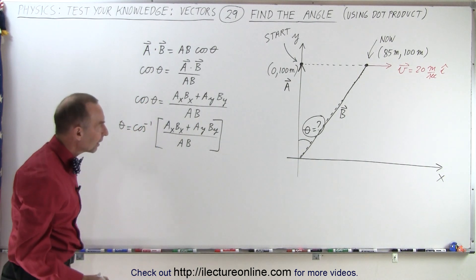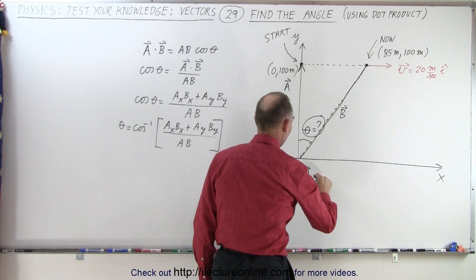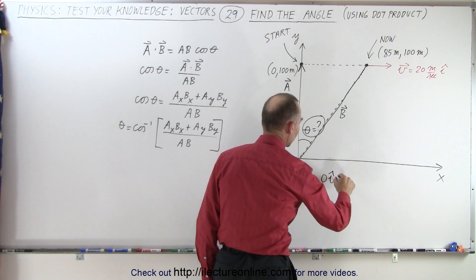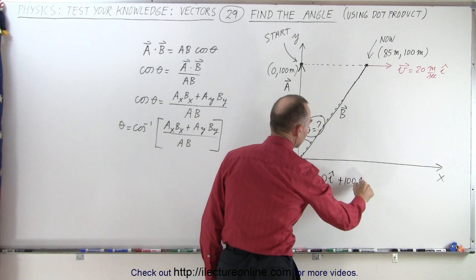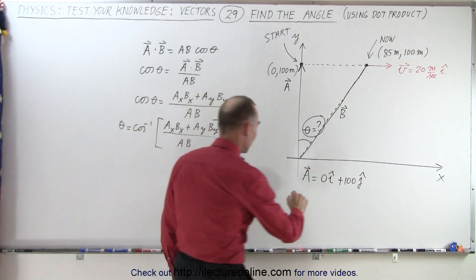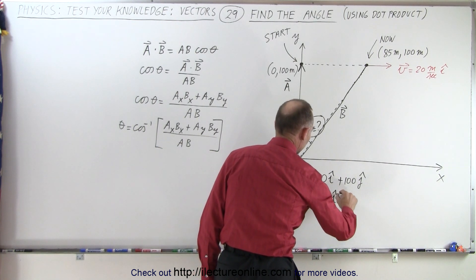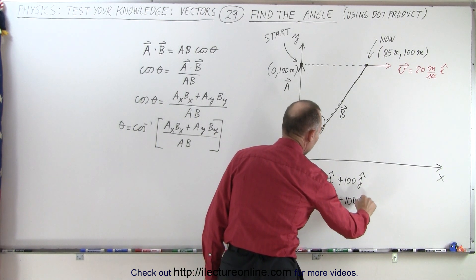All right, let's now define our vectors. We can then say that vector a can be defined as being 0 in the i direction plus 100 in the j direction. With vector b, we can define vector b as being 85 in the i direction plus 100 in the j direction.